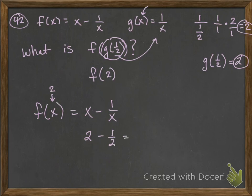So this is going to be 2 minus 1 over 2. So 2 minus 1 half is going to give me 3 halves, or 1 and 1 half, which is answer choice K.